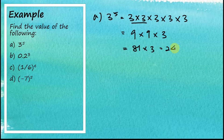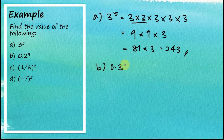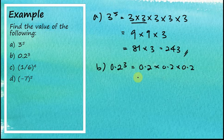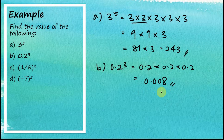For part b, 0.2 to the power of three equals 0.2 × 0.2 × 0.2. Two times two is four, four times two is eight. Since we have three decimal places in total, the answer is 0.008.